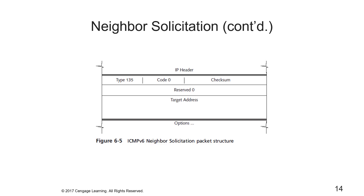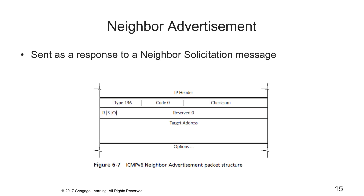For neighbor advertisement, a node sends a solicited neighbor advertisement message when requested — usually responding to a neighbor solicitation message. If its own link layer address or role changes, the node will send an unsolicited neighbor advertisement message to quickly propagate new address information. The neighbor advertisement packet structure and message format fields are shown here.